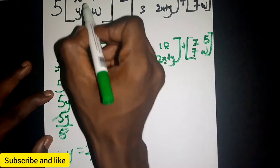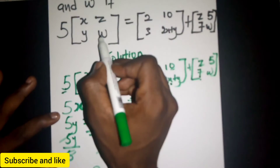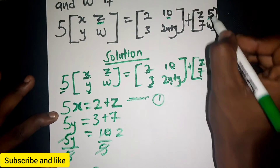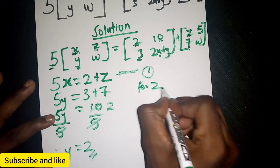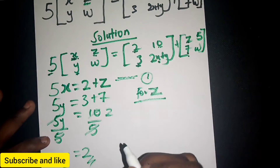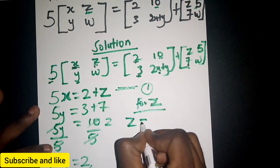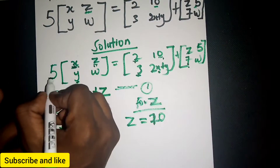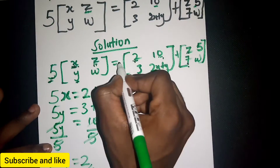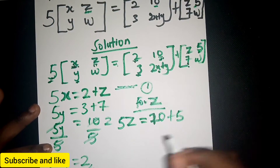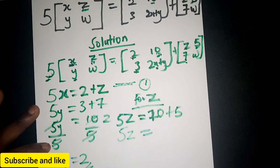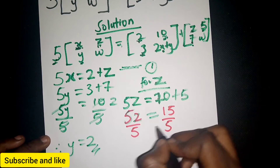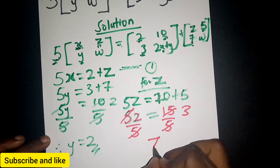Now let's look at z. We have z at a position, and remember the constant 5 multiplies it, so 5z = 10 + 5. That gives us 5z = 15. Dividing both sides by 5, we get z = 3.